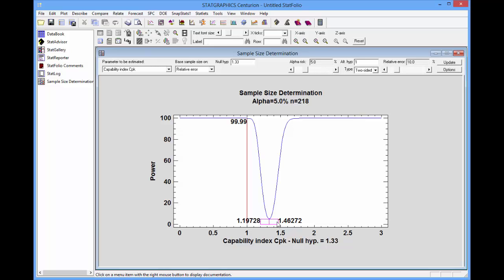Down below, you see the confidence interval that I would get if, in fact, CPK turned out to equal 1.33. The confidence interval would range from 1.197 to 1.463.